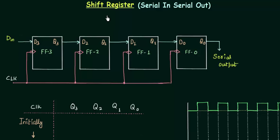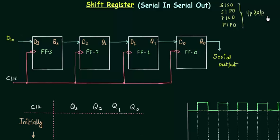In the last presentation I explained the data formats and classified the registers. The first classification was based on input and output, and we had serial input serial output, serial input parallel output, parallel input serial output, and parallel input parallel output. We also classified the registers based on application, and we had shift registers and storage registers.